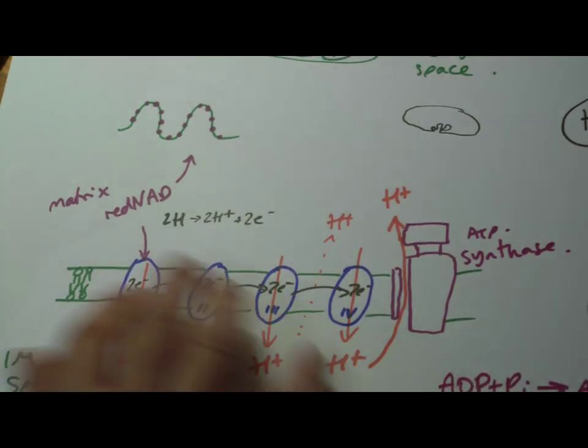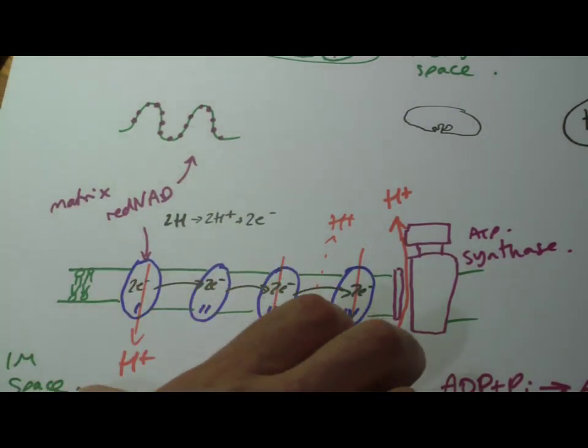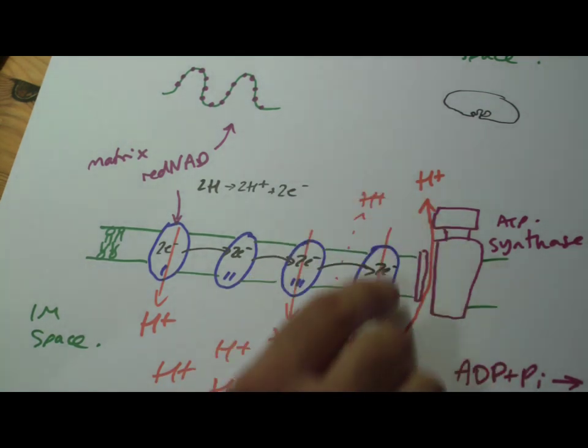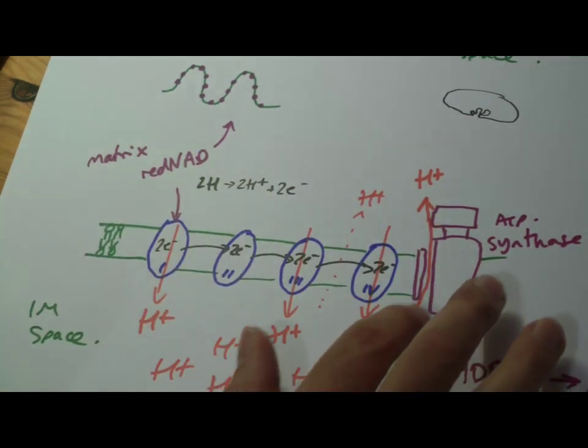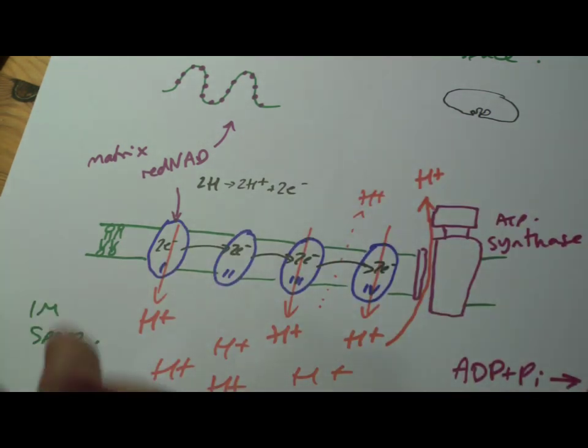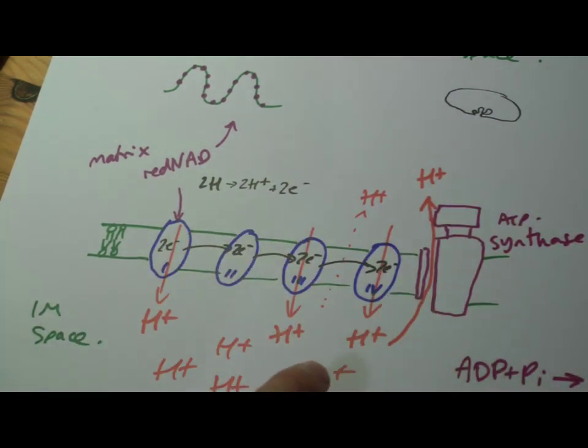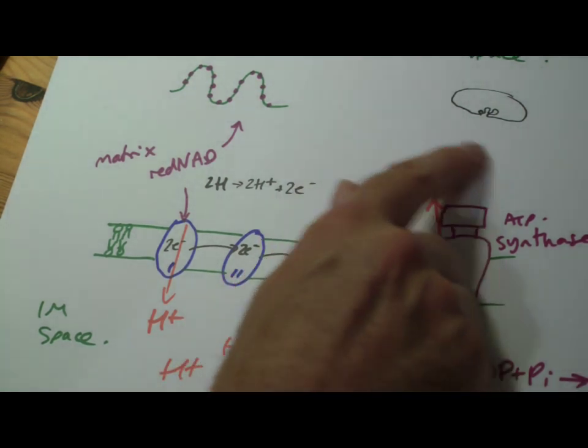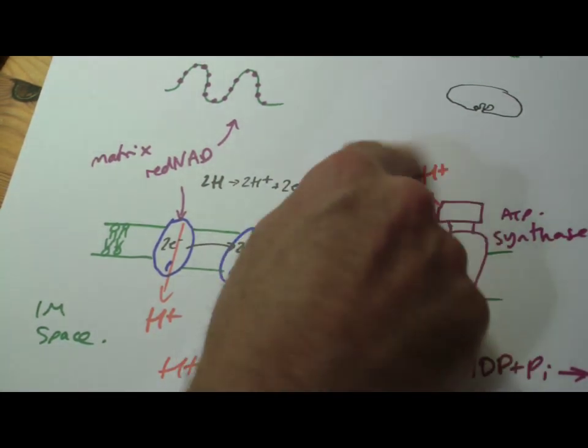So that's the whole principle behind this whole thing. You build up a supply of hydrogen ions and you allow it to flow through in a controlled way and you make use of that energy, that potential energy as it flows down, not along, but down the concentration gradient and down the electrochemical gradient.